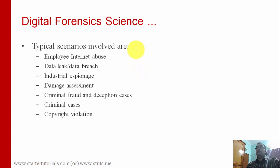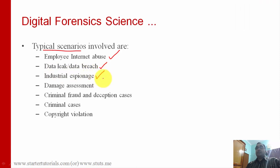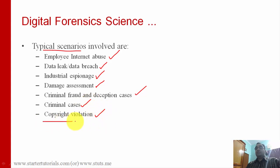Now, in which kinds of cases do forensics people investigate? They are listed here. First one is employee abuse through the internet — for example, someone is harassing an employee in an organization. Another one is data leak or data breach, like a hacker compromising a database. Then industrial espionage — for example, a group of hackers stealing the secrets of companies like TCS, HCL, Wipro, or Google. Next is damage assessment, followed by criminal fraud and deception cases, and finally copyright violation, which is pirating.